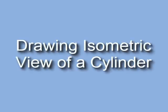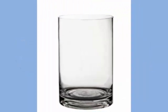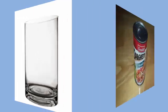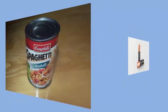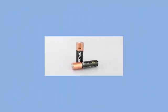In this video we will learn how to draw the isometric view of a cylinder. Cylinder is a very common shape in engineering. In our day to day life there are many objects which are cylindrical in shape — for example a glass, a can, and these batteries are also cylindrical in shape.